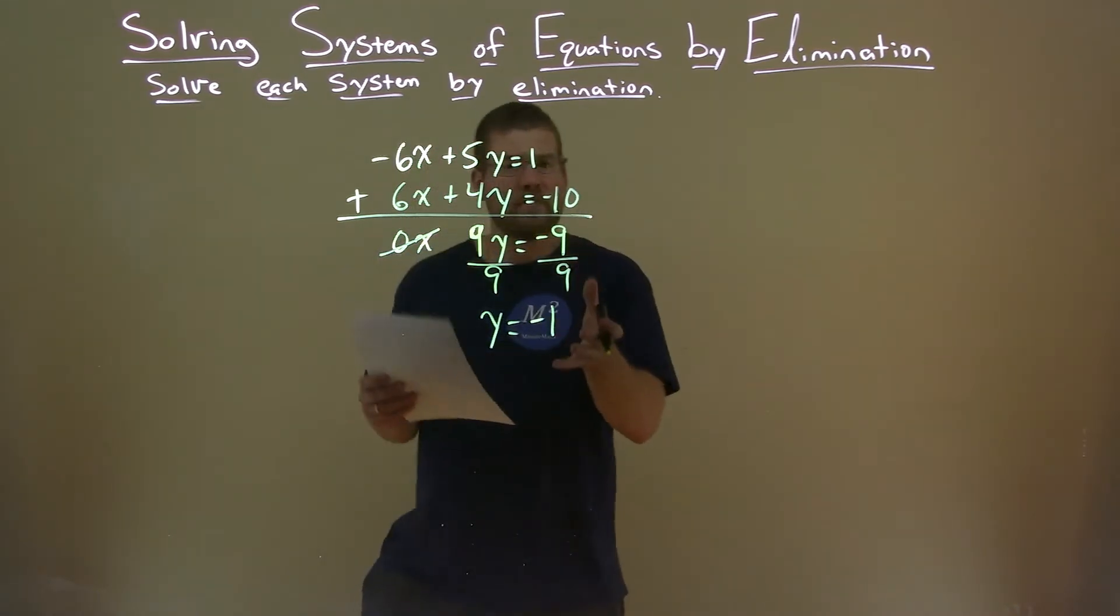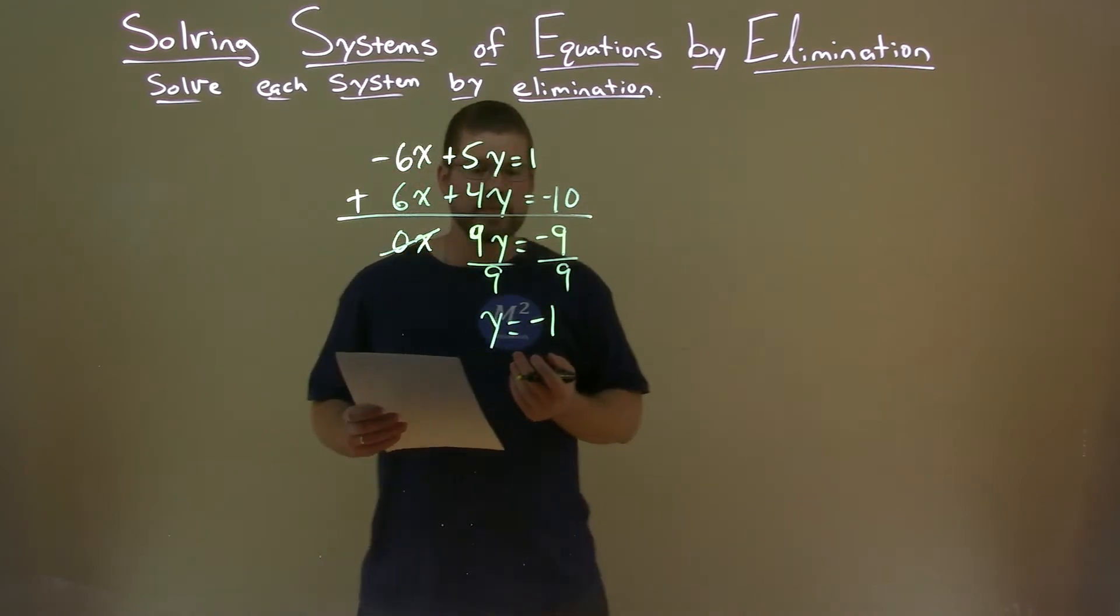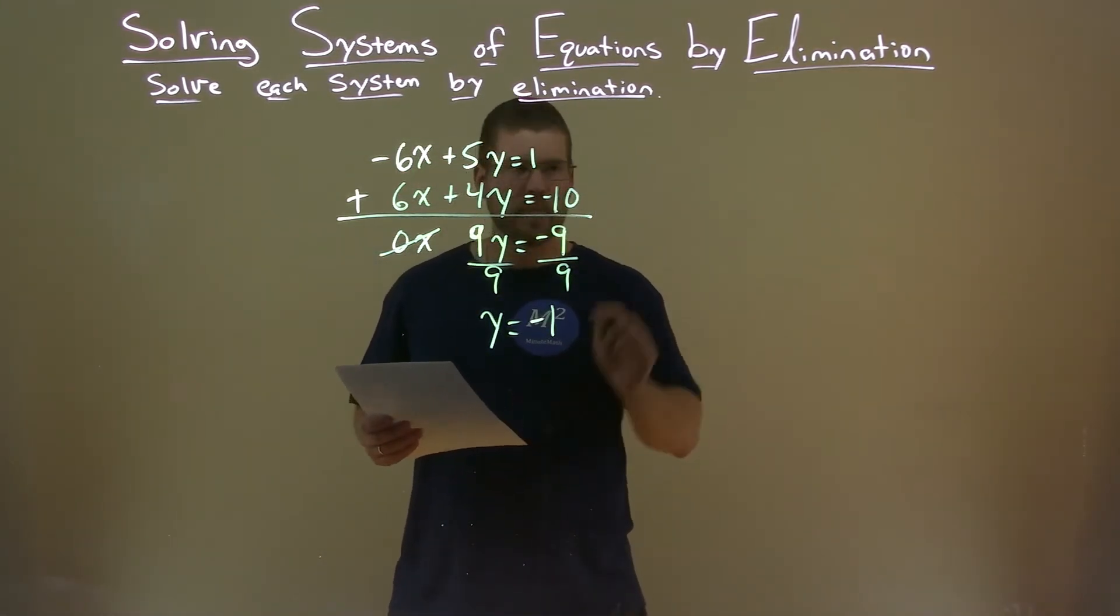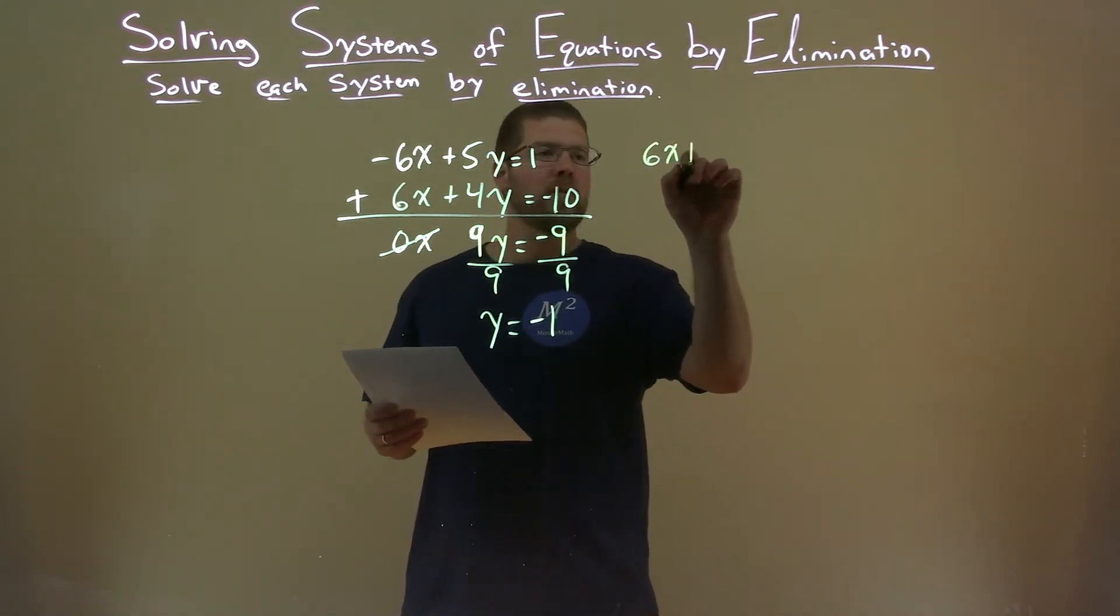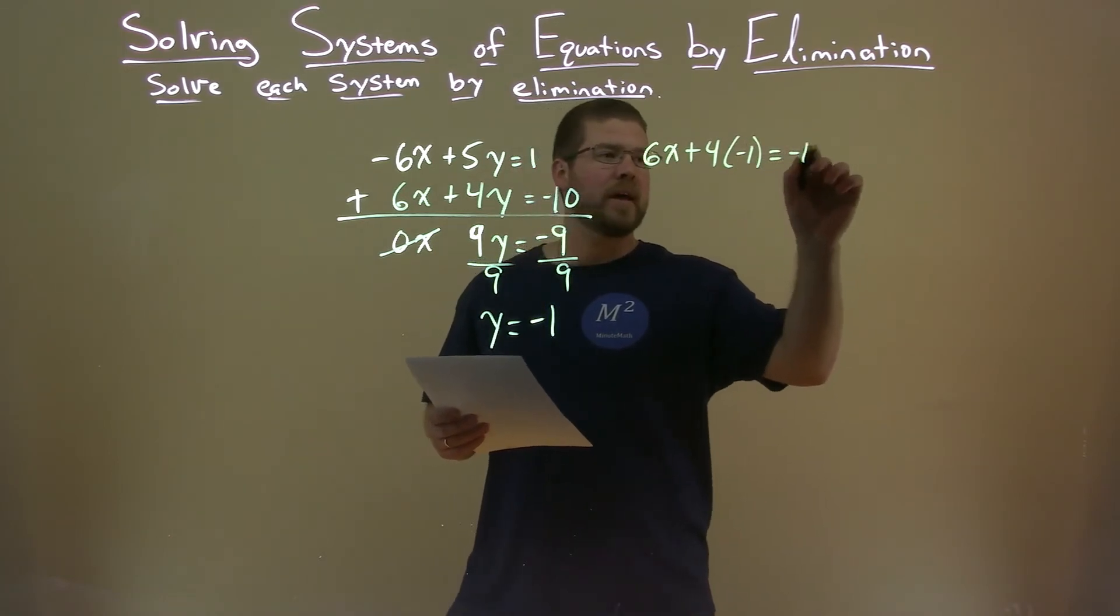So we take that information, and we have to plug that back into one of our equations and solve for x. I like to pick the easier one of the two, and I think that's the second equation. We take 6x plus 4, and instead of y, I'm going to put negative 1 in. And it's equal to negative 10.